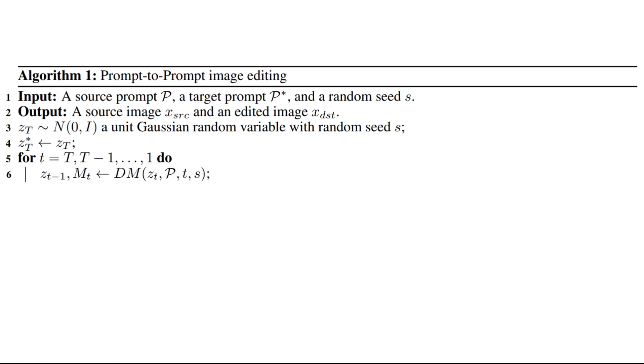Then we have the denoising for loop. We pass the noisy image zt and prompt P and time step t with the seed s to the denoiser of the diffusion model, and we should get one sample less noisy, zt minus 1, and also the attention maps Mt.